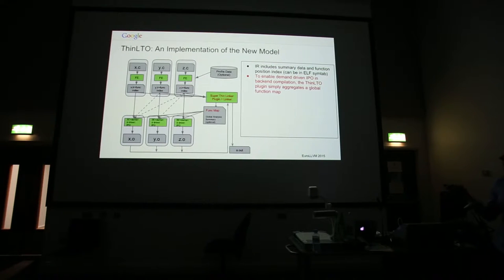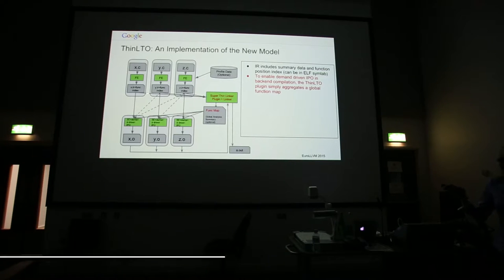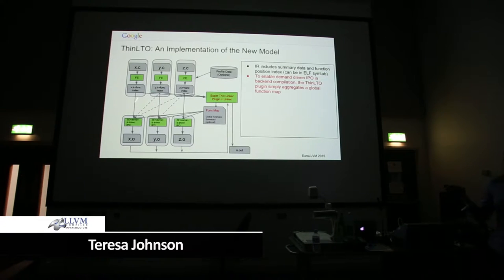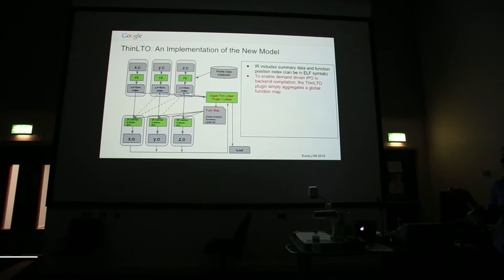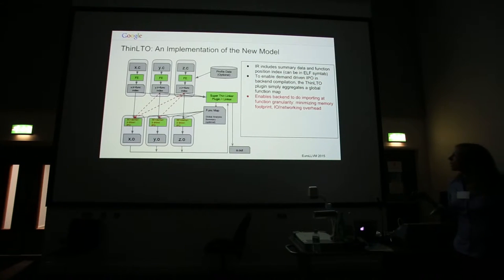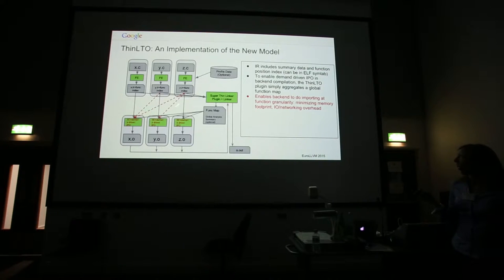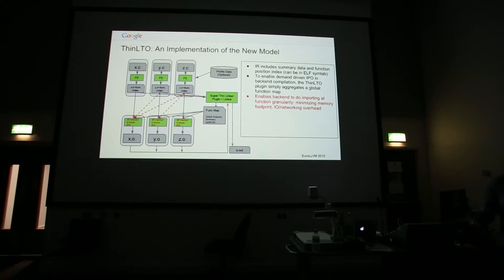This thin linker plugin simply aggregates, at a minimum, function indexes into a global map of functions — where to find which function, which module, and its offset into the IR. This is what the backend parallel processes use to import on demand. Because we're importing at the function level, it minimizes overall memory usage and also the IR overhead.